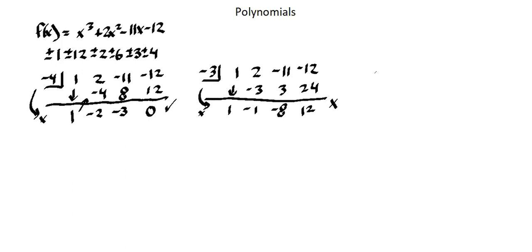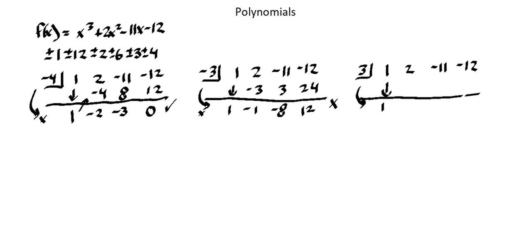Let's try positive 3. Coefficients of 1, 2, negative 11, negative 12. Carry down our 1. Begin our multiplication process: 3 times 1 is 3. 2 plus 3 is 5. 3 times 5 is 15. Negative 11 plus 15 is 4. 3 times 4 is 12. Negative 12 plus 12 is 0. So we've now identified another one of our zeros. I can continue to use this trial and error process until I've worked through to find all of my zeros.